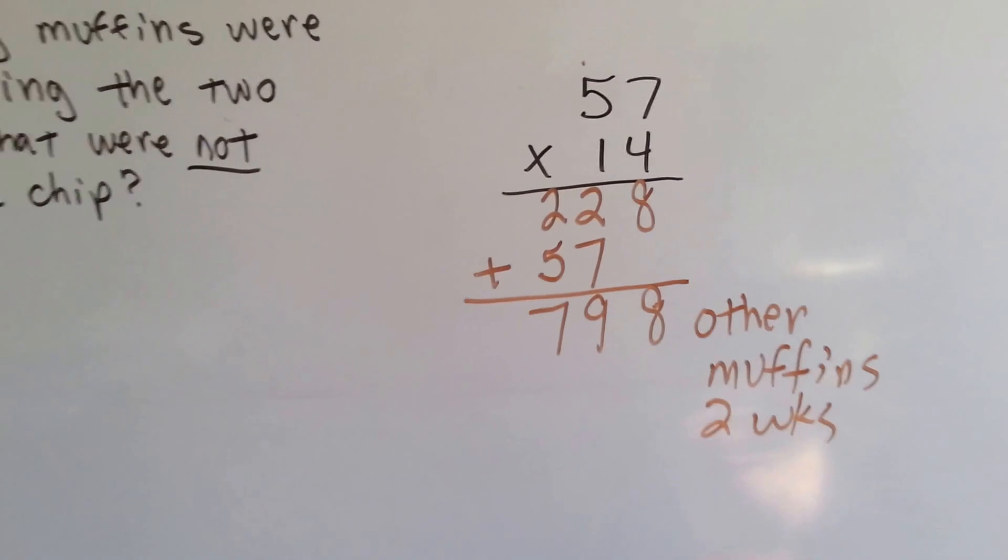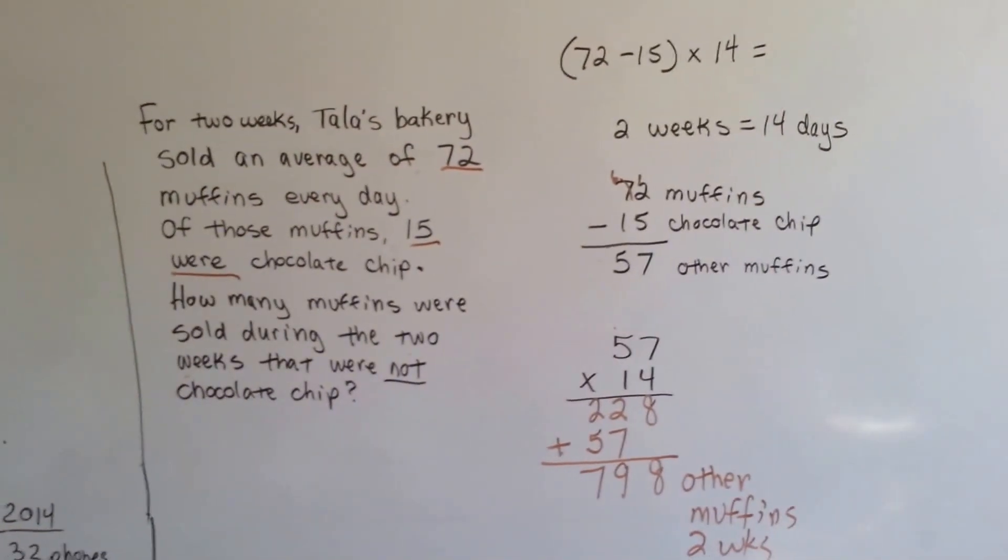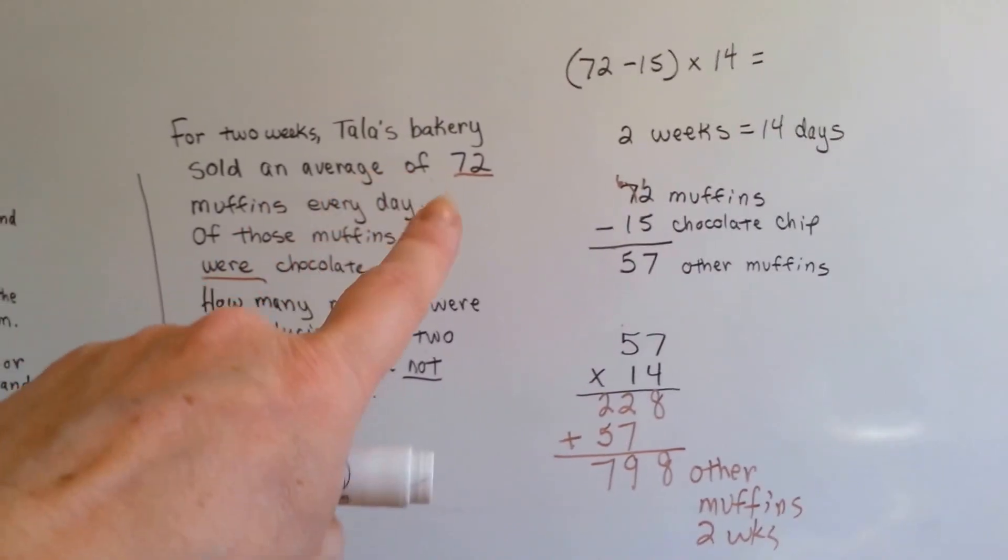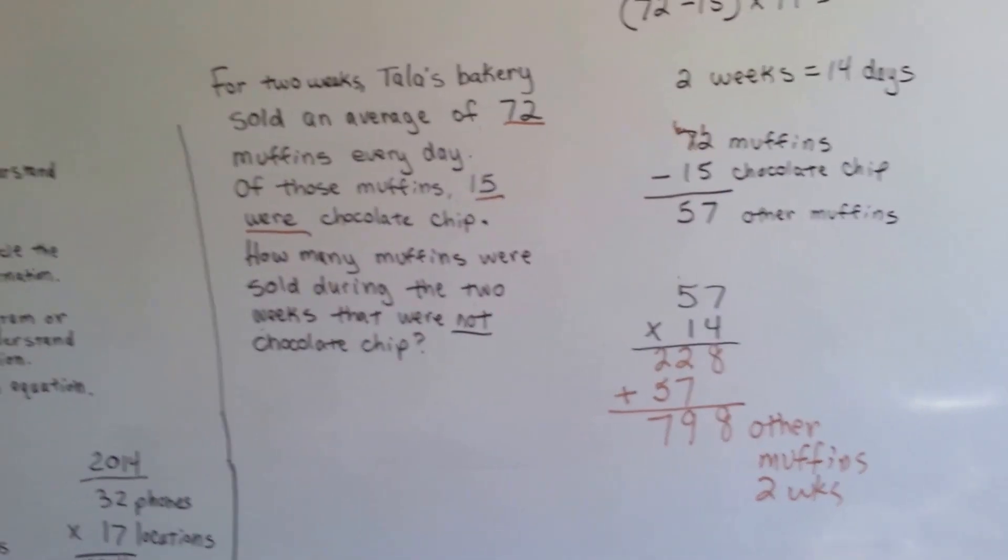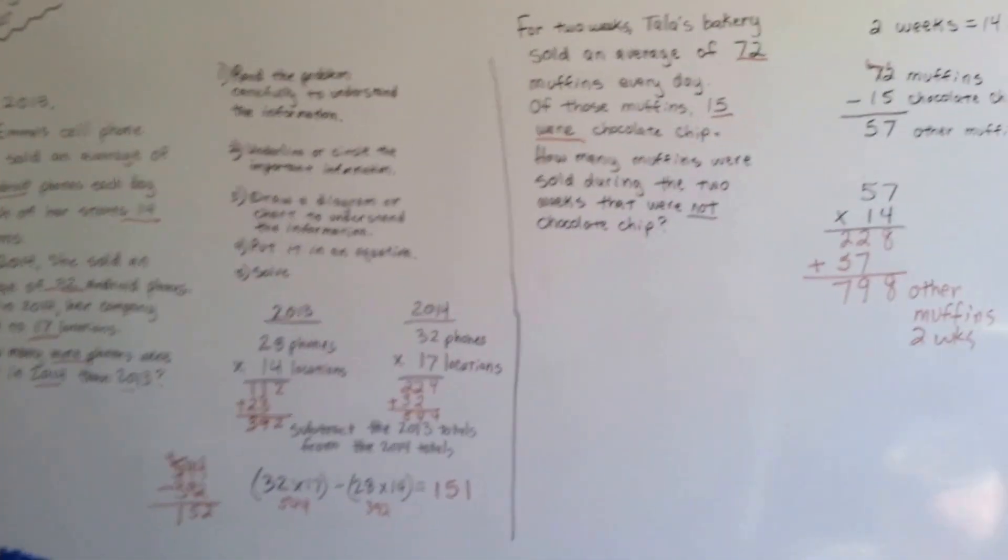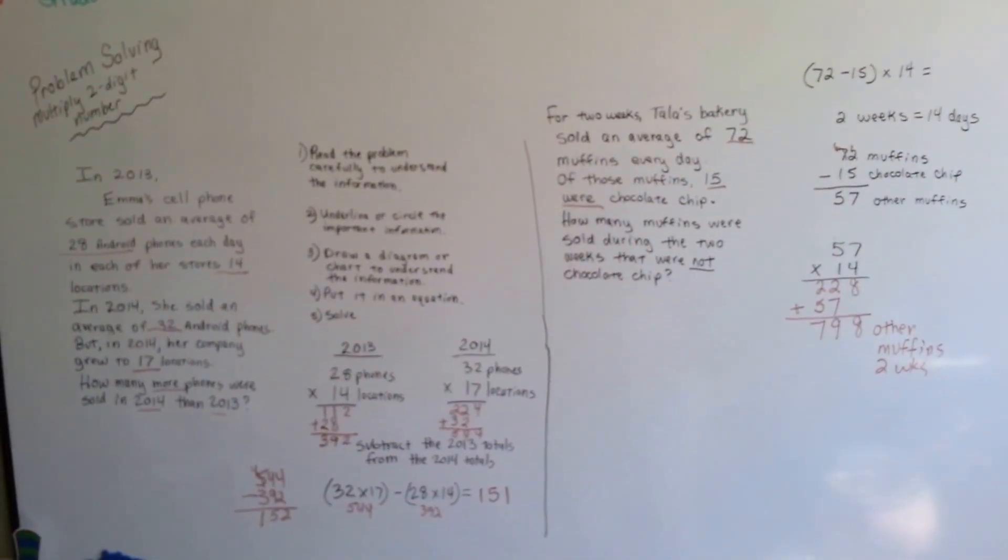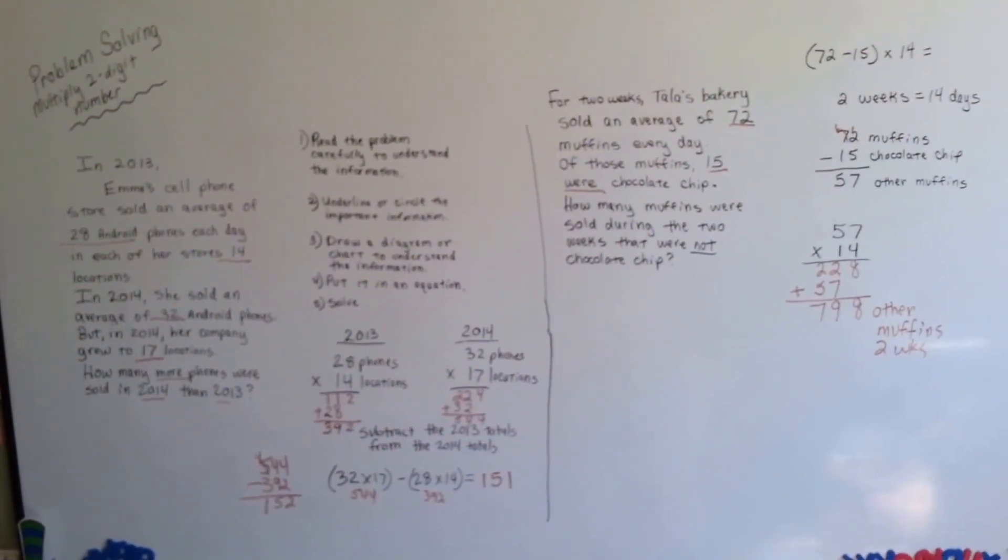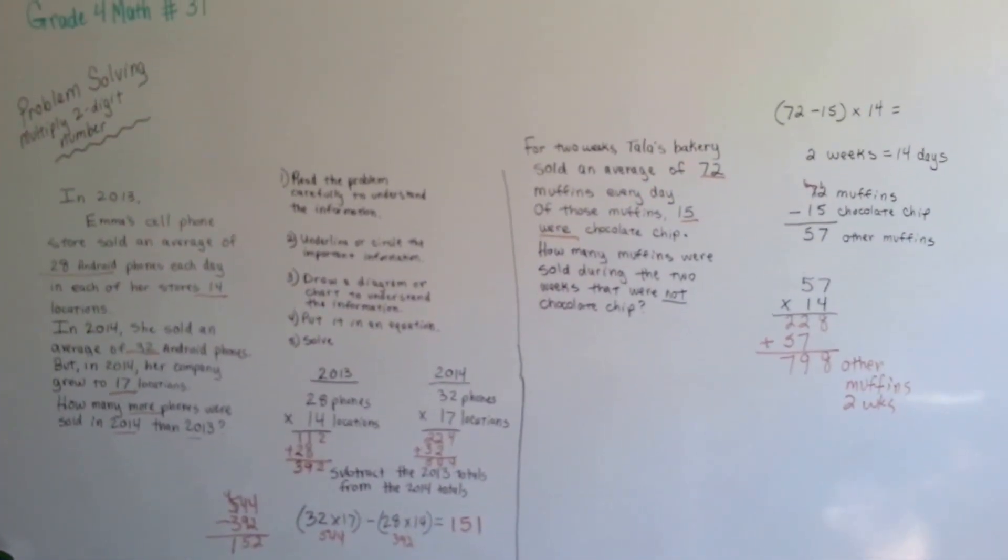See that? We underlined the important information. We wrote our equation. And then we took the steps to solve it. And we did that for each one. So, read the problem, underline or circle information, draw a diagram, write an equation, and then solve it. That's the steps to problem solving for a word problem.